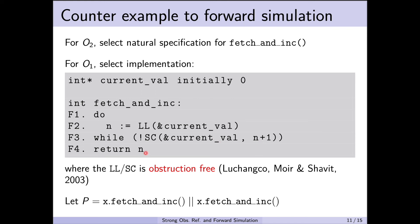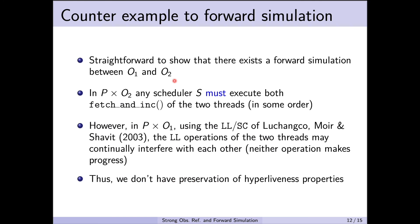We then return the old value n stored previously at line F2. The particular implementation of load-link/store-conditional we consider is the obstruction-free design by Luchanko, Moyer, and Chavit in their 2003 paper. The client program p uses a shared object x and performs a fetch-and-increment operation in two different threads. It's fairly straightforward to show that there does indeed exist a forward simulation between O1 and O2.